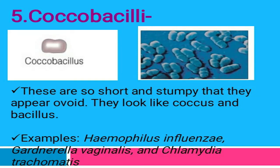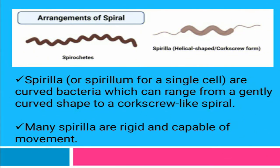The last arrangement of bacillus is coccobacilli. Coccobacilli are very short and ovoid in shape, and they also look like cocci. Examples are Haemophilus influenzae and Chlamydia trachomatis.